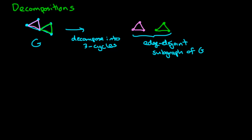So in general, what a decomposition is is breaking down a graph into a family of edge-disjoint subgraphs, and they don't have to be three-cycles. They don't even have to be cycles and they don't have to be the same. This just happened to be an example where they were the same.